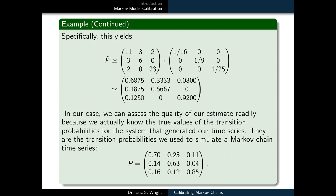Specifically, this approach yields the following estimates for our transition probabilities. P11 is about .6875, P12 is .3333, P13 is .0800, P21 is .1875, P22 is .6667.